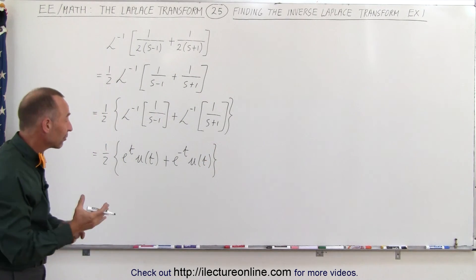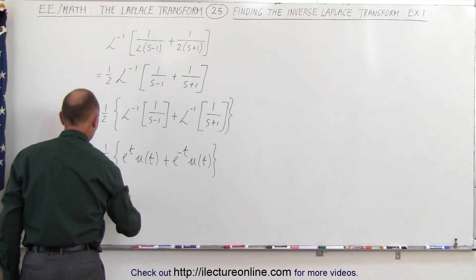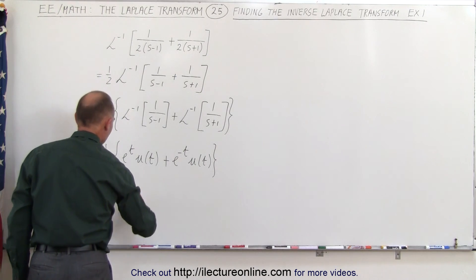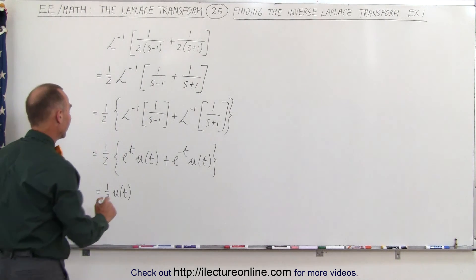Now you can see that you can factor out a u of t so this becomes equal to 1 half the step function u of t and in some cases they don't even write the step function because that is equal to 1 times